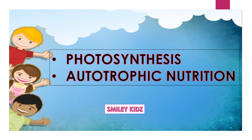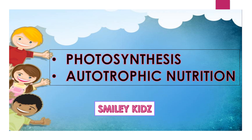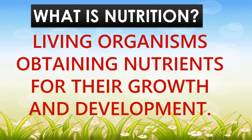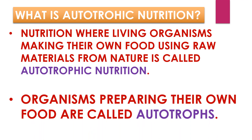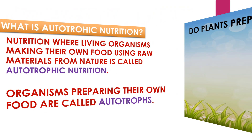Hello everyone, welcome to Smiley Kids. Today we're going to learn about photosynthesis and autotrophic nutrition. Living organisms obtaining nutrients for their growth and development is called nutrition. Nutrition where living organisms make their own food using raw materials from nature is called autotrophic nutrition. Organisms preparing their own food are called autotrophs.